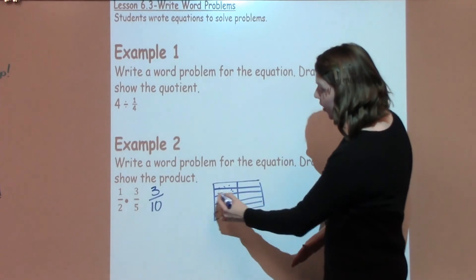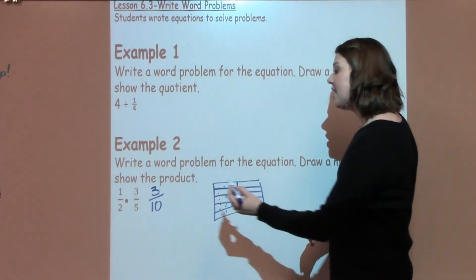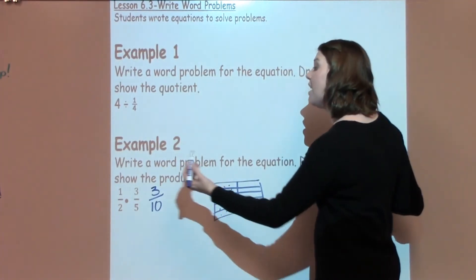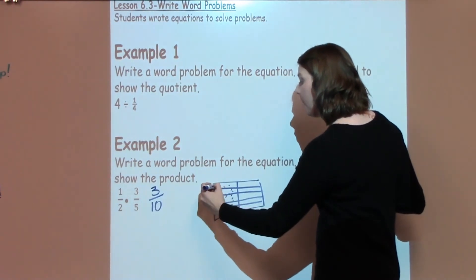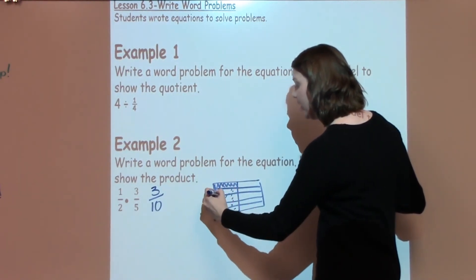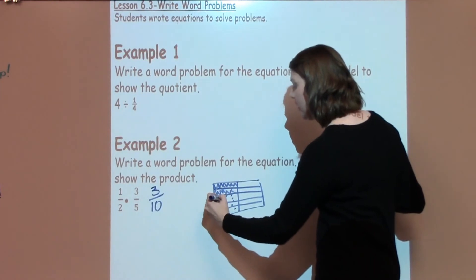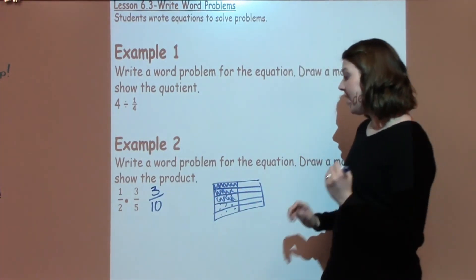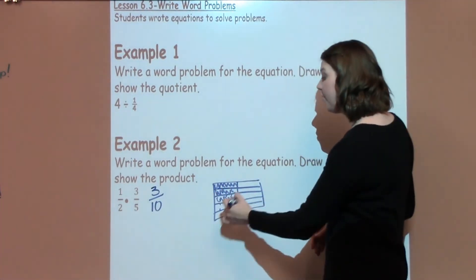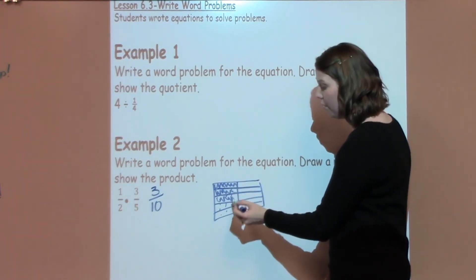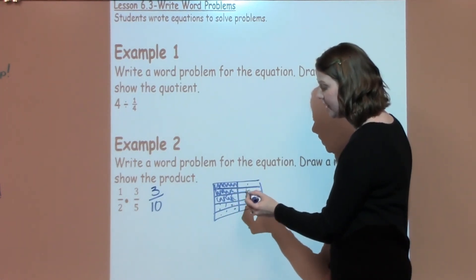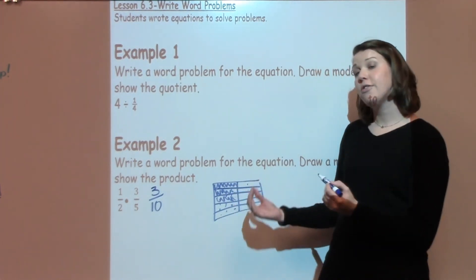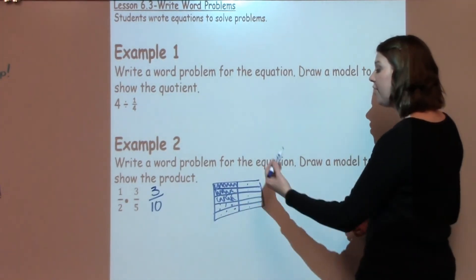I've taken this, if I look going across, I've got my 3 fifths. Now I need to shade in my 3 over here that I've already used of my 1 half. So here's 1, 2, and 3. So I now have shown that I've got 3 out of 1, 2, 3, 4, 5, 6, 7, 8, 9, 10. I've shown a model now to show that I've got 3 out of 10.